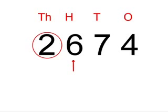In this case, our number is 6 and is between 5 and 9. Therefore, we round up. The number 2674 rounds up to 3000. So, the answer is 3000.